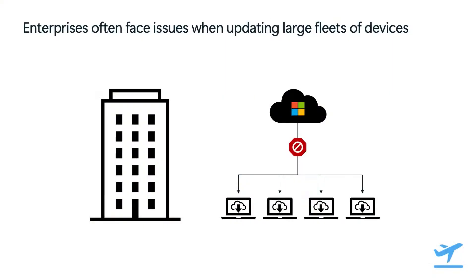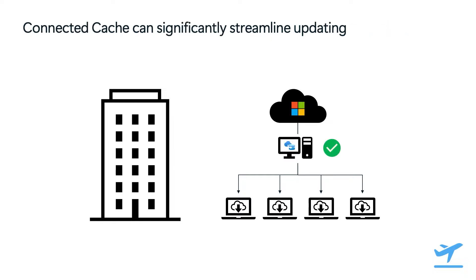All your devices start downloading the update at the same time, which spikes your network bandwidth usage and maybe even crashes it. You have a bunch of parallel downloads that are super slow, even though it's the same exact update to all these different devices. Now you could alleviate some of this pain by using delivery optimization's peer-to-peer function, which downloads content from other Windows devices on the same network. But some enterprise customers are unable to use peer-to-peer, or they need a more dedicated solution. So enter Connected Cache.